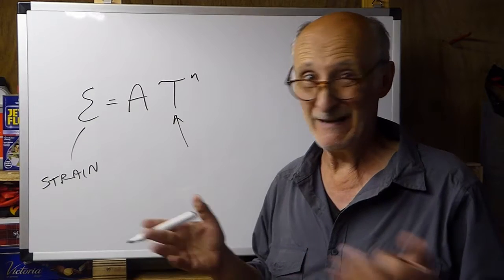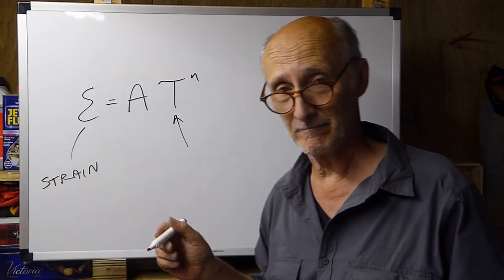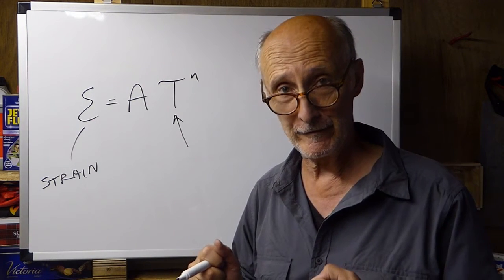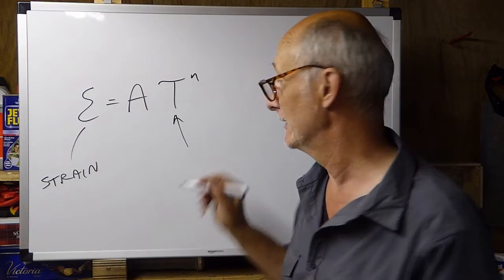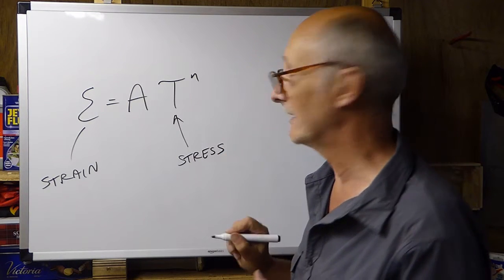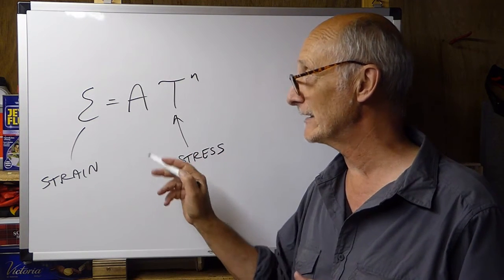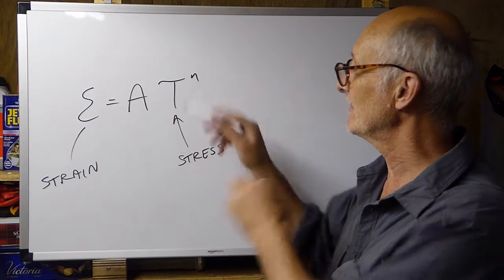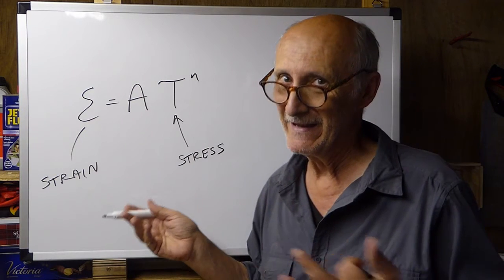Tau, Greek symbol tau, but any symbol would do, but tau is what we conventionally use. Tau is the amount of force that we're applying, the amount of stress that we're applying. So, what this is saying already is that the amount of deformation that you get is equal to something including the amount of stress that you apply.